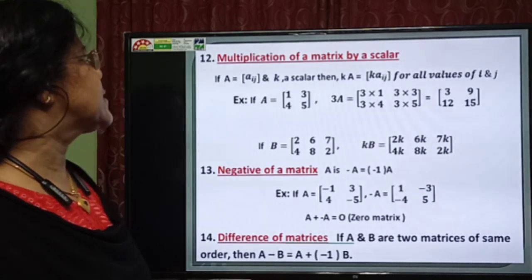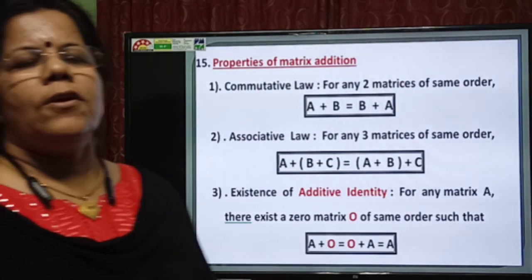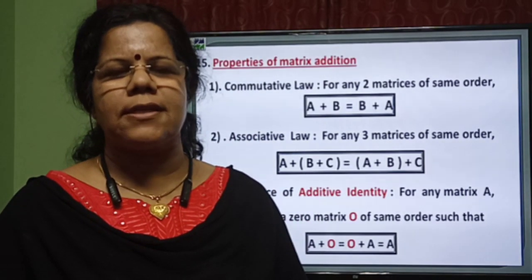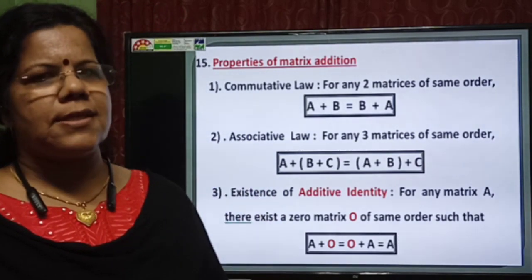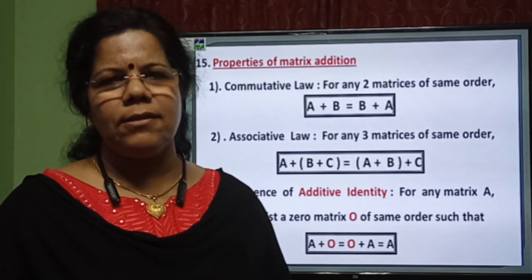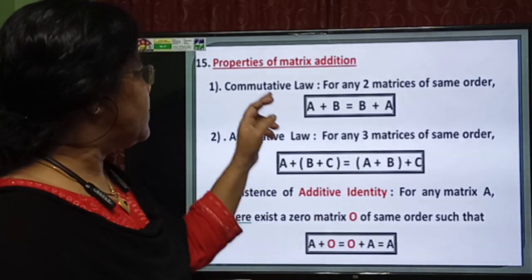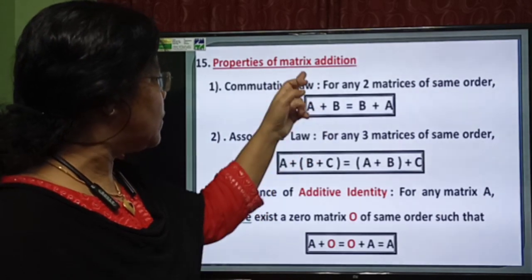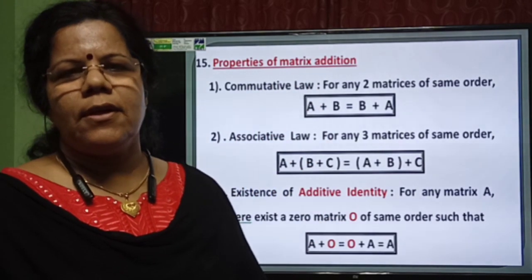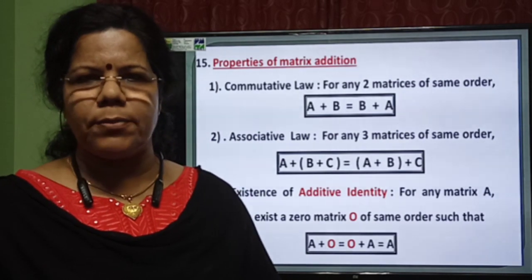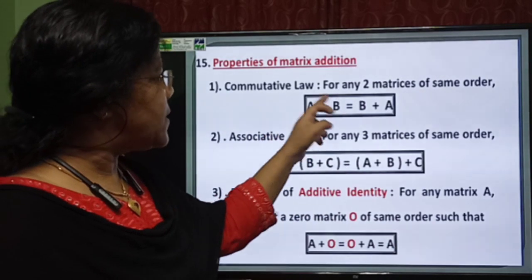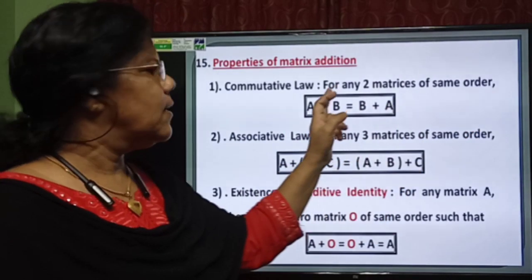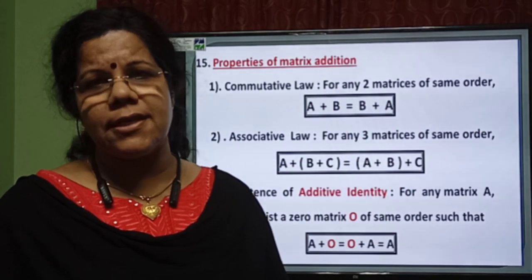Now, going to the properties of matrix addition. We know in the set of real numbers there are properties like commutativity, associativity, existence of identity, and existence of inverse. Among matrices, when matrix addition is possible, these laws can be observed. The first one is commutativity. We know 2 plus 3 equals 3 plus 2. Similarly, A plus B equals B plus A. Matrix addition is commutative.